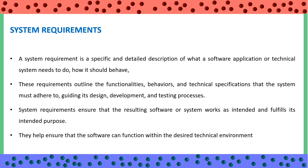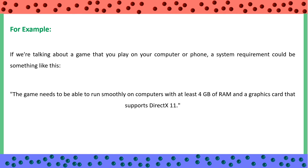System requirements ensure that the resulting software or system works as intended and fulfills its intended purpose. They help ensure that the software can function within the desired technical environment. Basically these requirements are the actual functions of the system. For example, if we're talking about a game that you play on your computer or phone, a system requirement could be something like: the game needs to be able to run smoothly on computers with at least 4GB of RAM and a graphics card that supports DirectX 11.